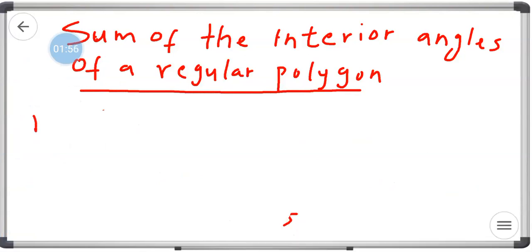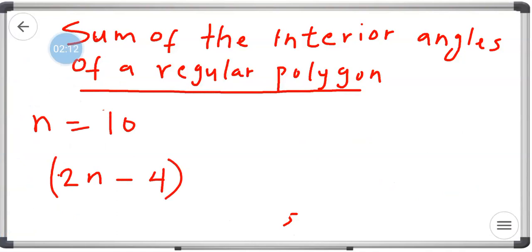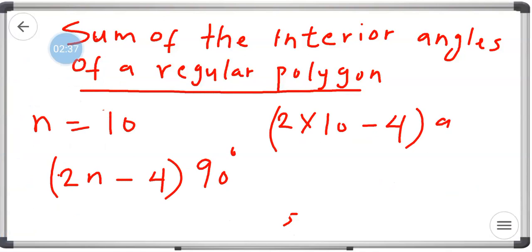So from here, n equals 10. Don't forget the formula: the formula is (2n − 4) × 90°. We've been told that our n equals 10, because the polygon has 10 sides. So we have 2 multiplied by n, which is 10, minus 4, in one bracket, times 90°.